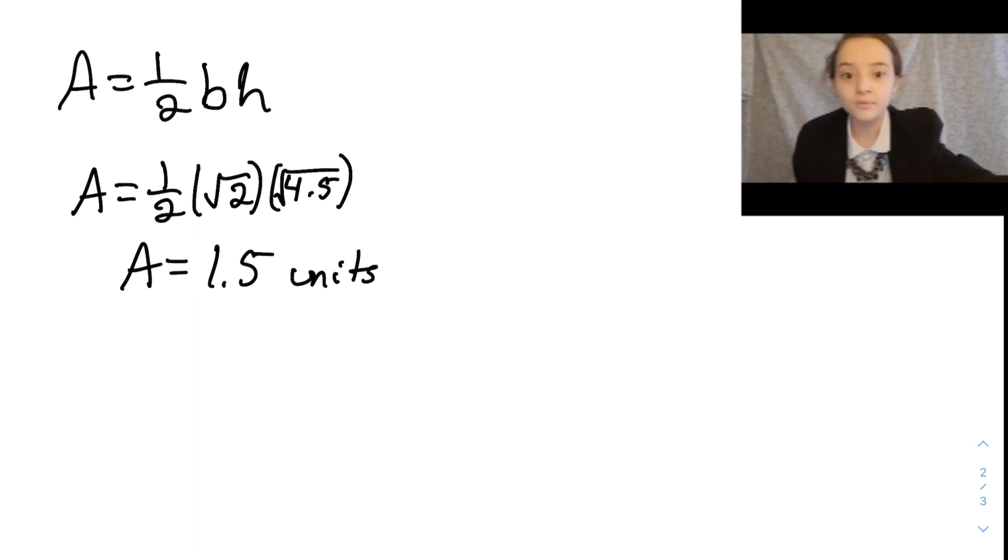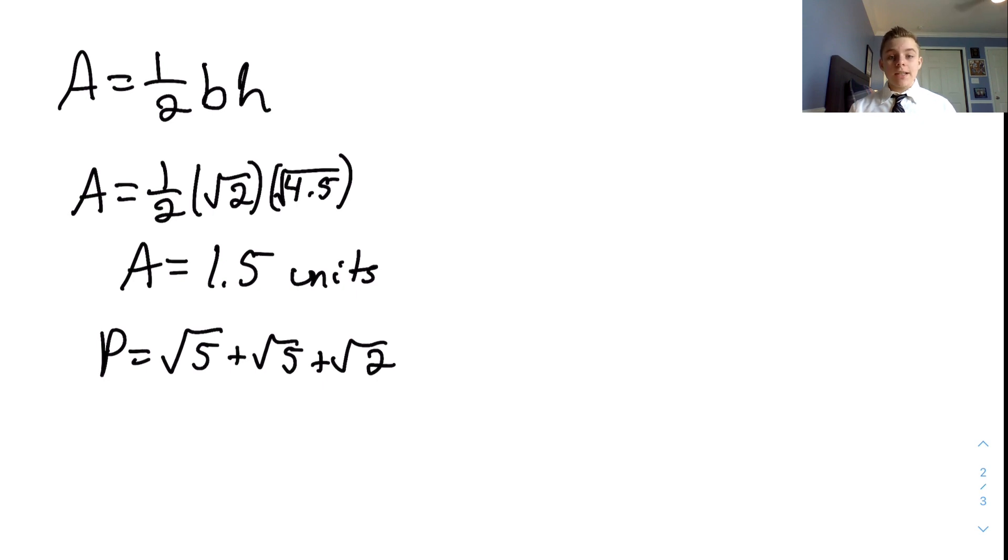We also know that the perimeter of the triangle is the square root of 5 plus the square root of 5 plus the square root of 2. When plugging the known area and perimeter of our triangle into this equation, we get 1.5 divided by (√5 + √5 + √2) equals the radius divided by 2.